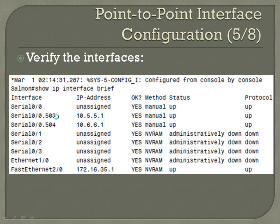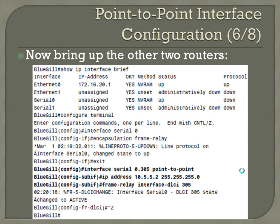Now bring up the other two routers. Jumping onto Bluegill, show IP interface brief to familiarize yourself with the interfaces. Looks like we need to make some changes to serial zero. Config T, interface serial zero, encapsulation frame-relay. You see the interface go up. Exit, then interface serial 0.305, point-to-point. Even though you've only got one interface here, you're still setting a logical sub-interface corresponding to the DLCI — just a good idea. IP address 10.5.5.2 255.255.255.0, then frame-relay interface-dlci 305. Everything comes up and the DLCI changes state to active.